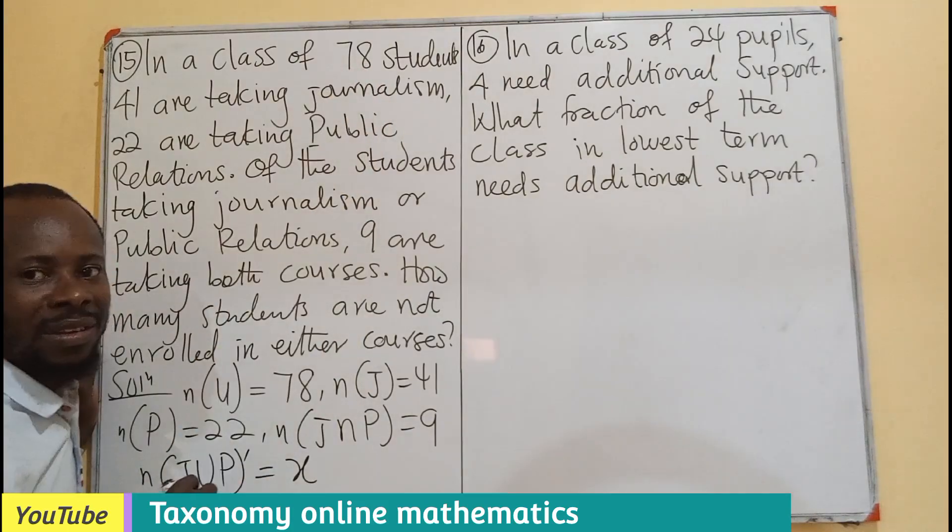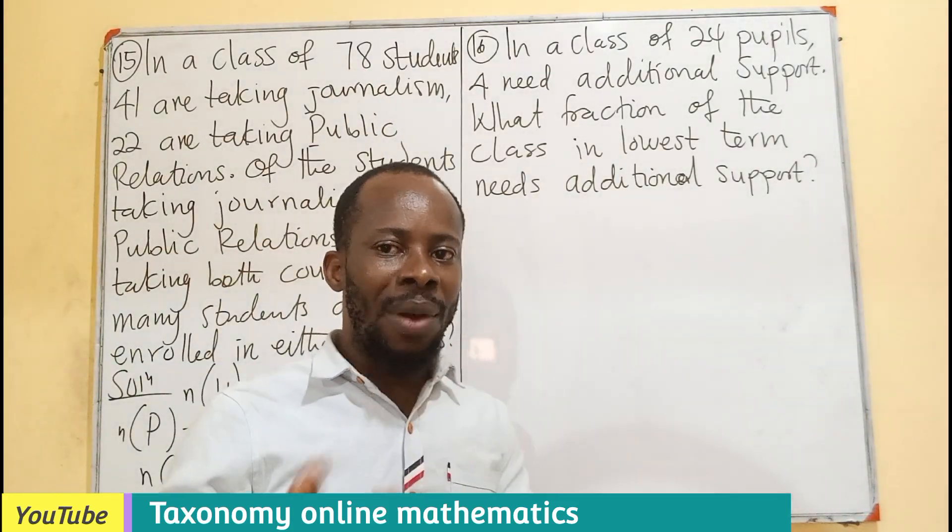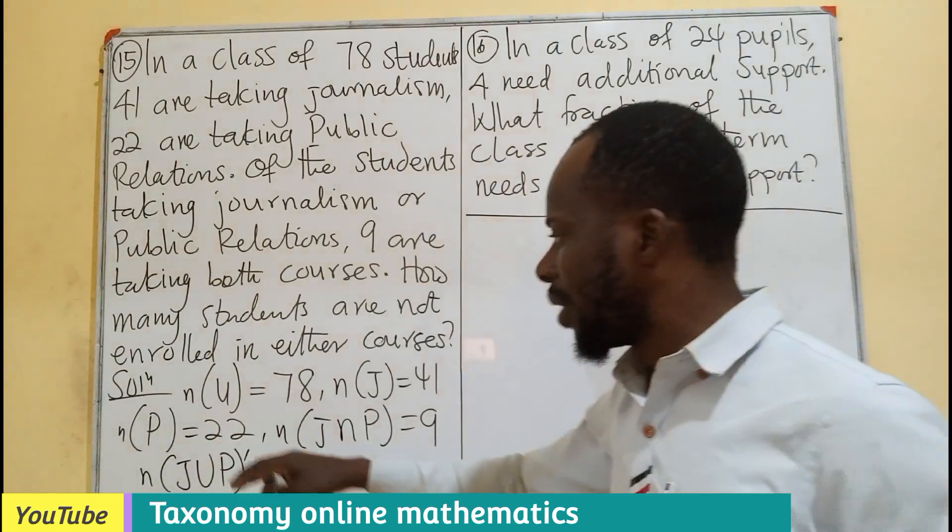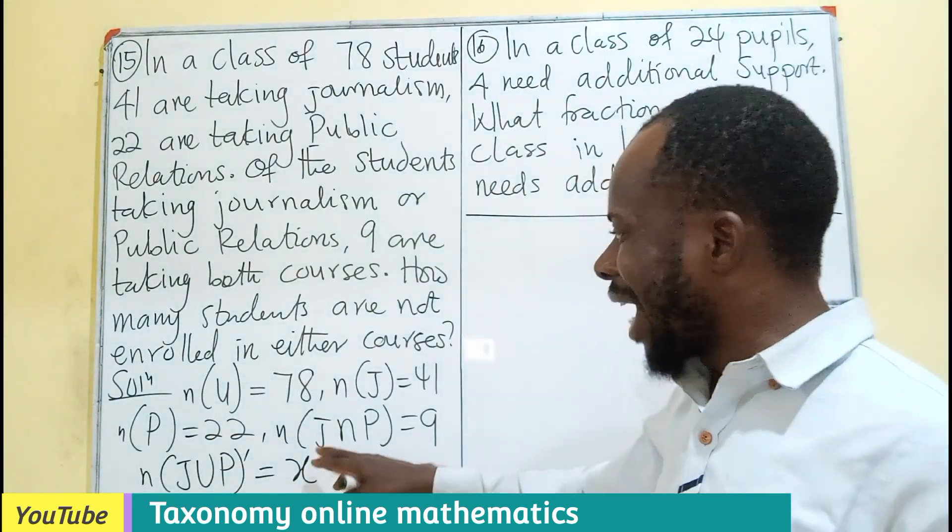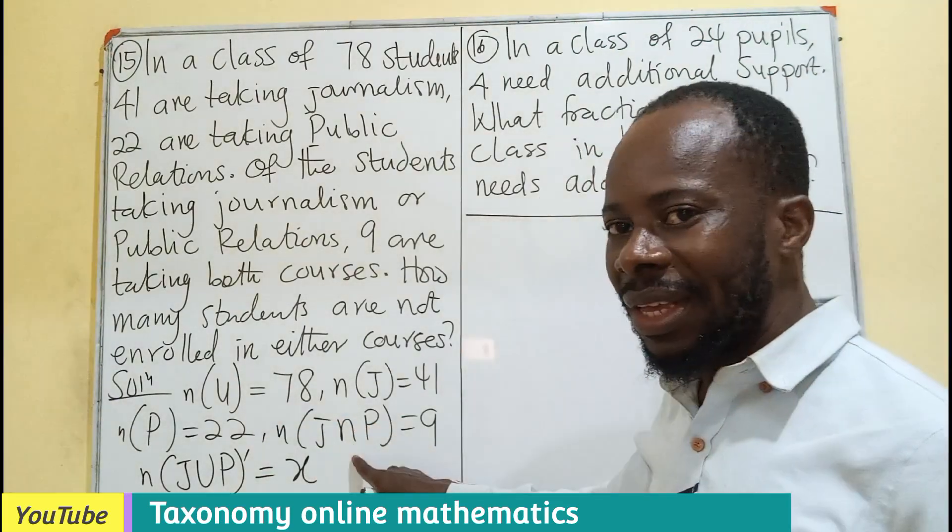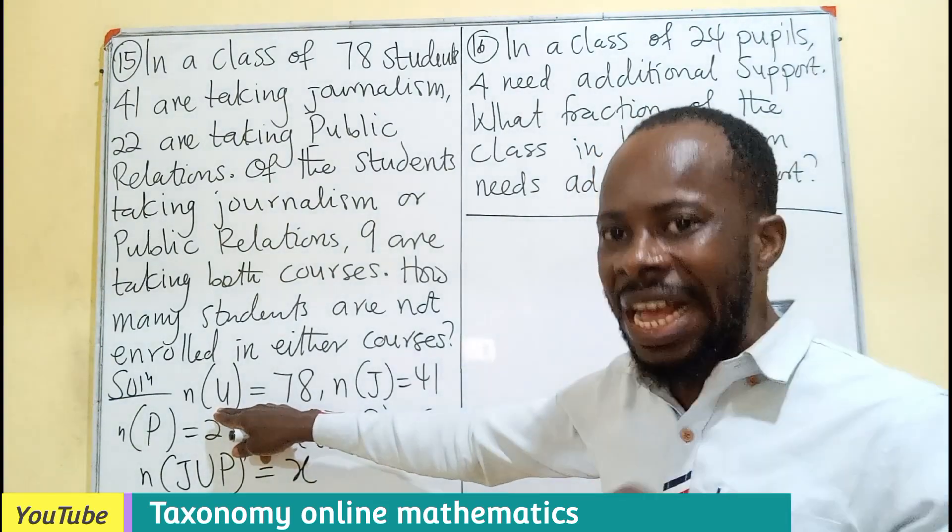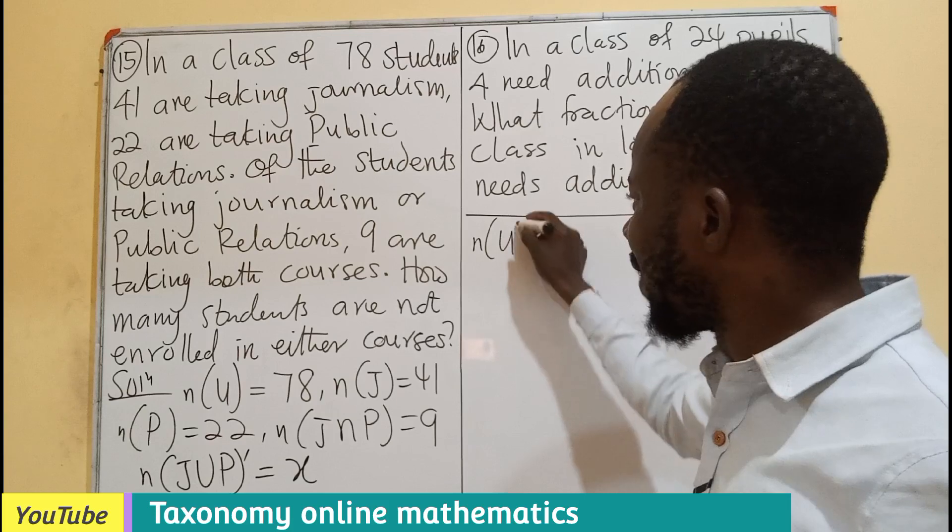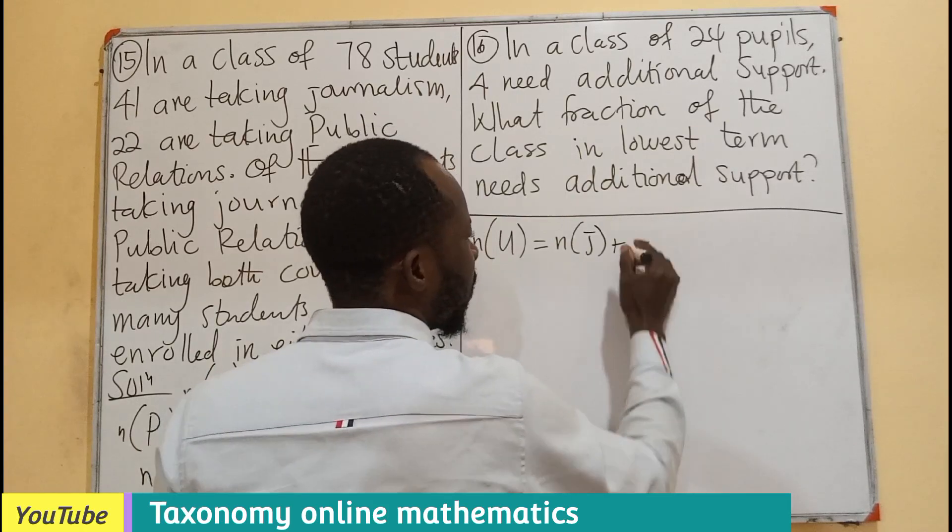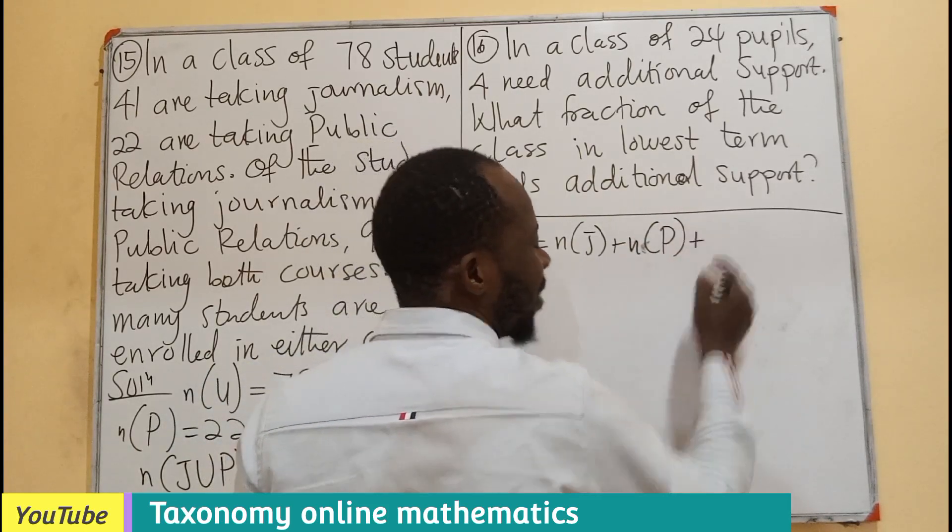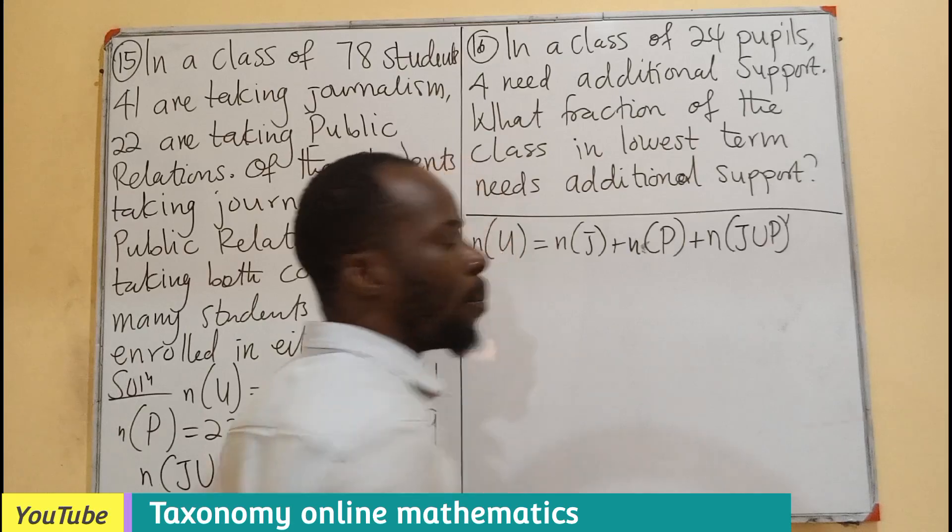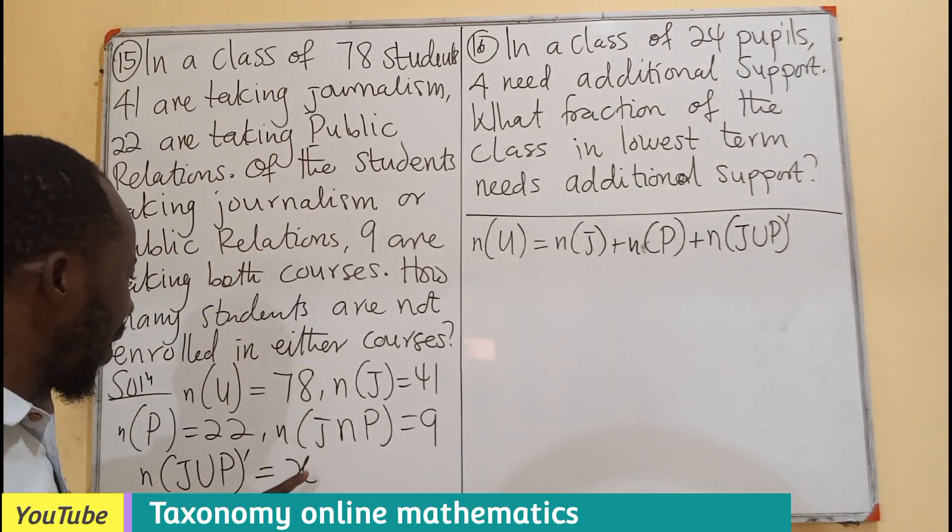We can use a Venn diagram to get our question. We can also use the DeMorgan's formula, which says that since we are dealing with union and we are having a complement, we cannot use the union of J and P. We have to use the universal set, which is the biggest set we have here. Finally, we need to take away the intersection.